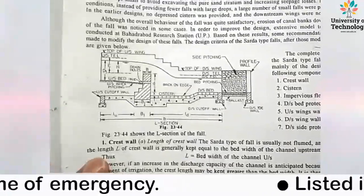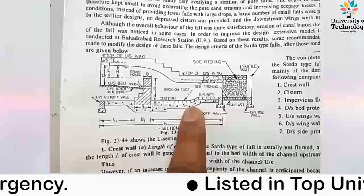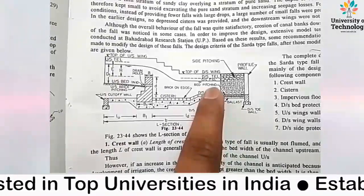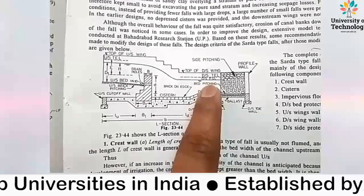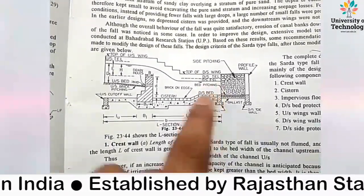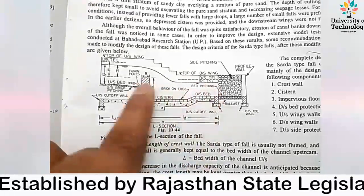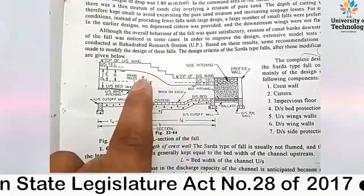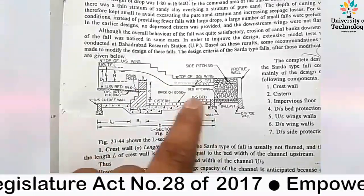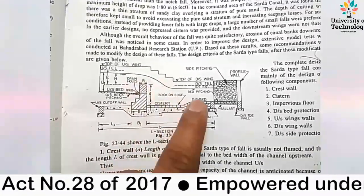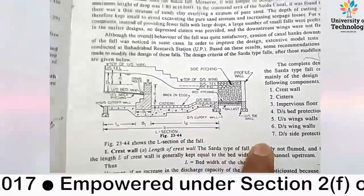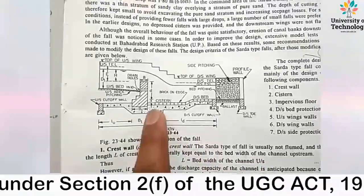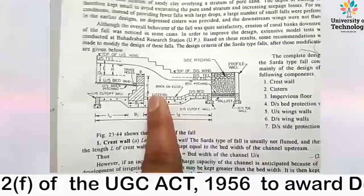Looking at the diagram, this height from the downstream bed level to the crest level — the difference between the crest level and the downstream bed level — is known as the maximum seepage head. It is equal to small d, as you can see in the figure.